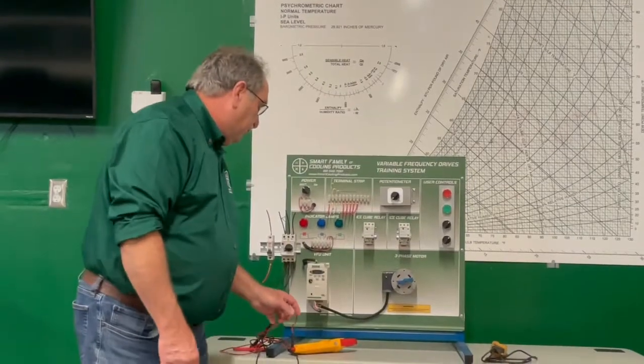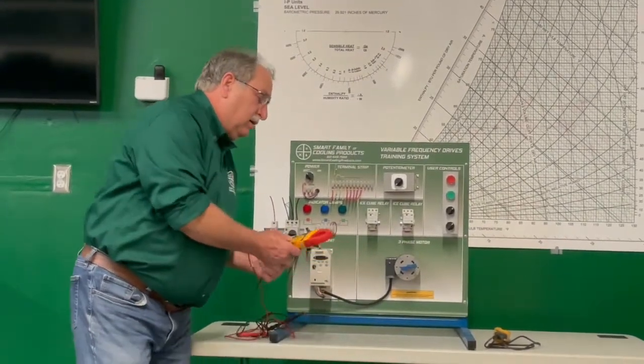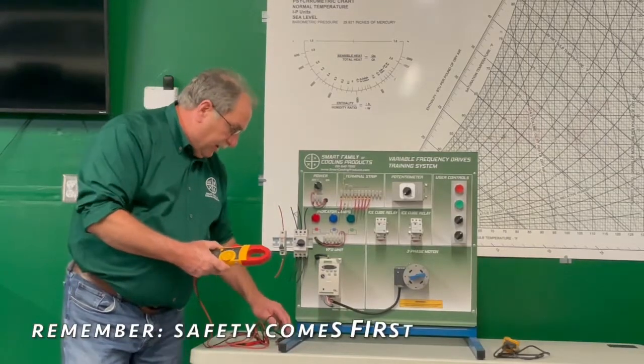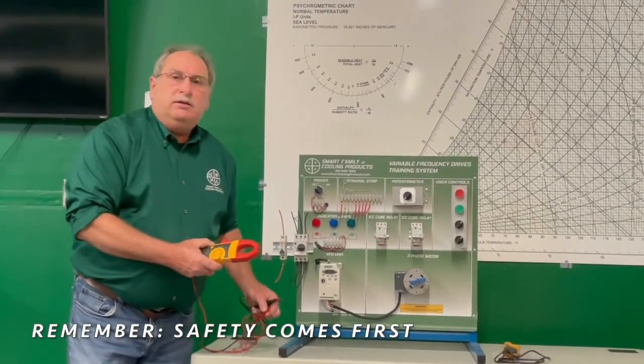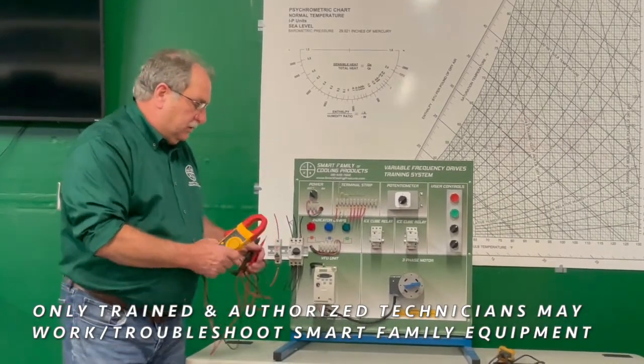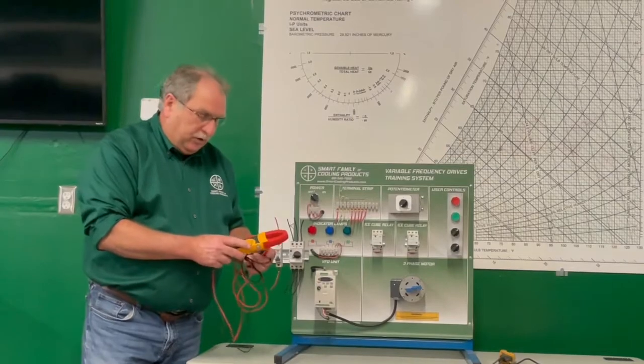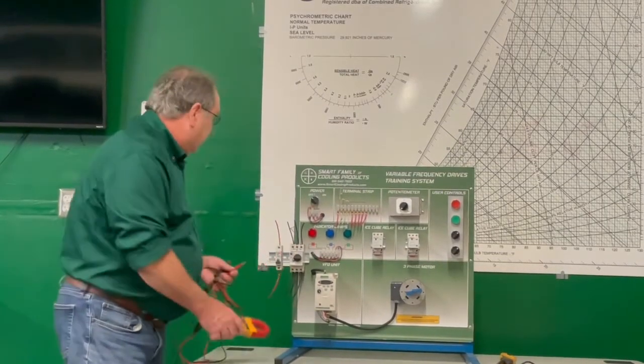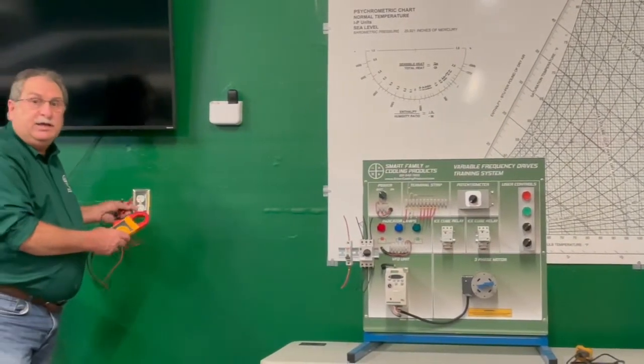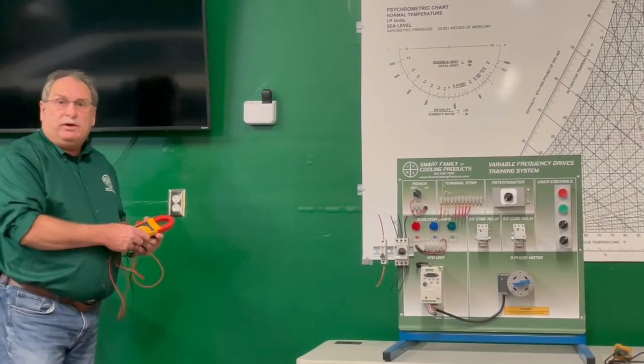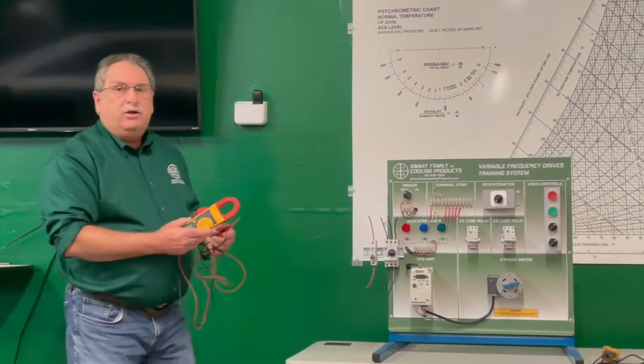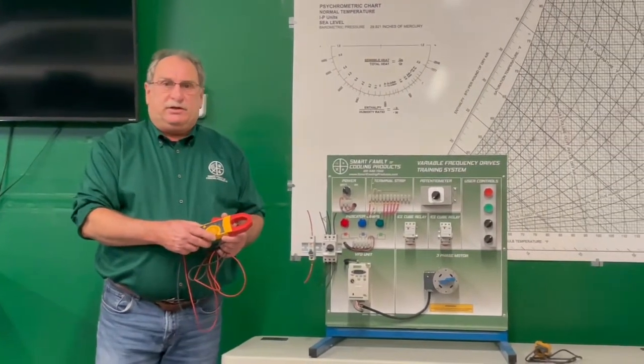But with reference to meters, safety should be your first and primary concern. So never do anything that's going to put yourself in jeopardy. With meters, I always like to test them first. If you have the ability to get on some kind of known power supply and check to verify that your meter is working properly, always do that first. And then you can use your meter to test live circuits.